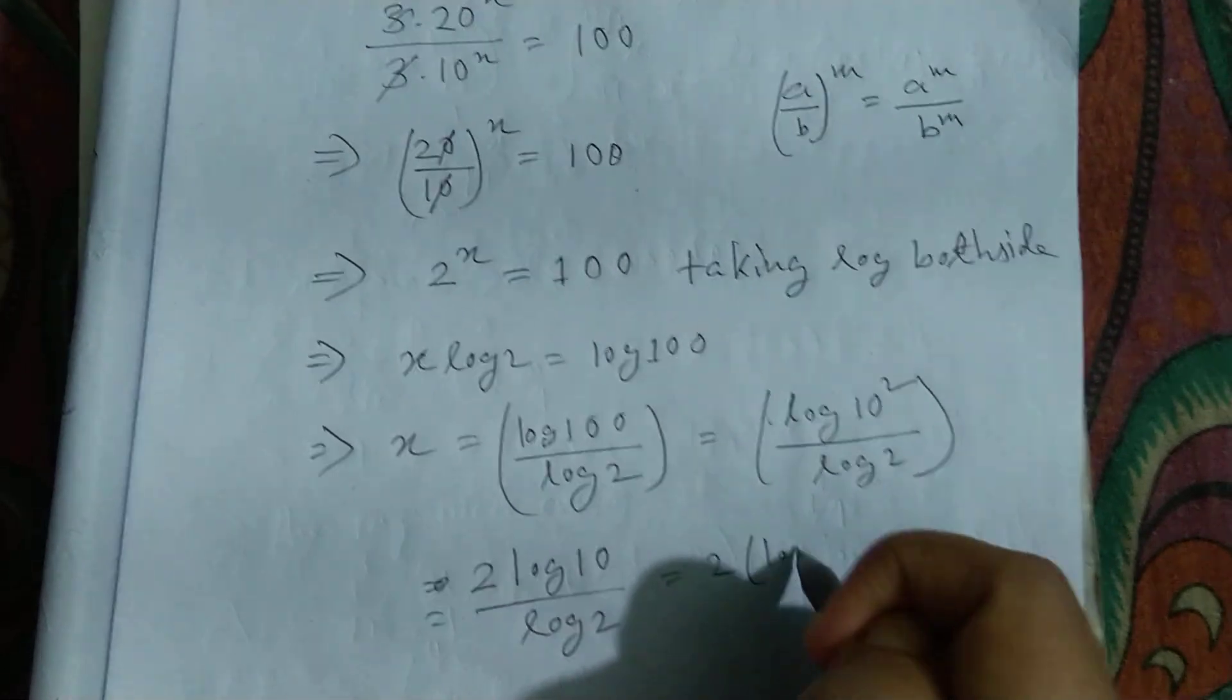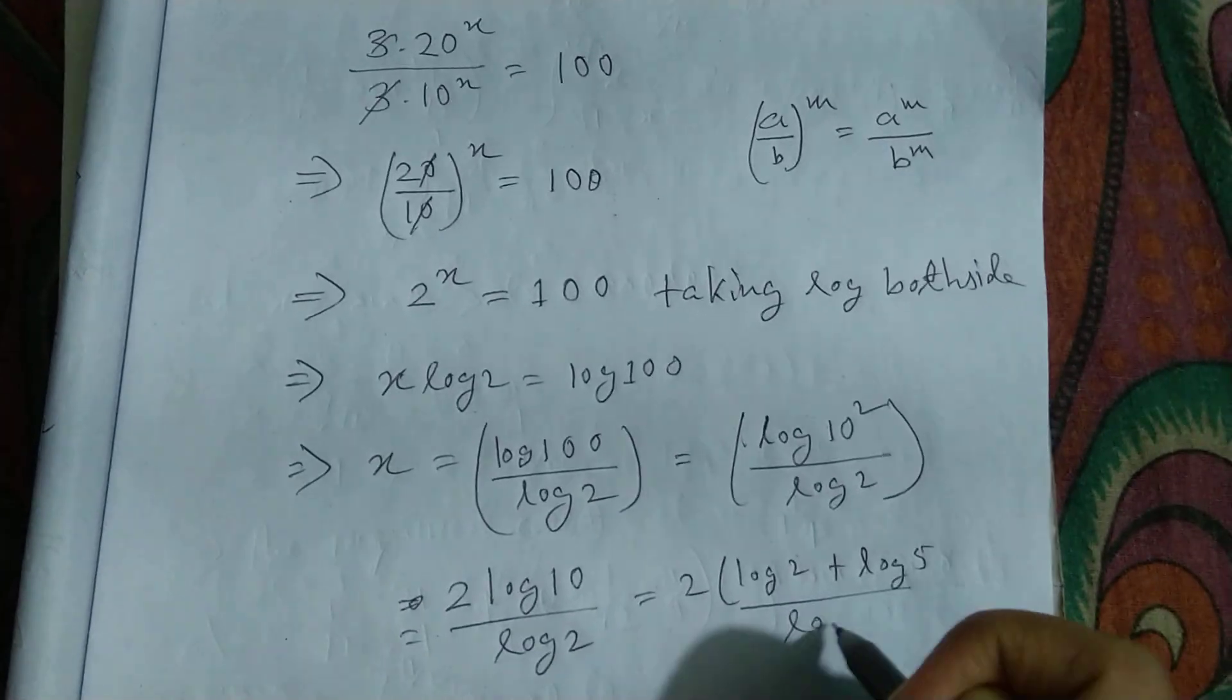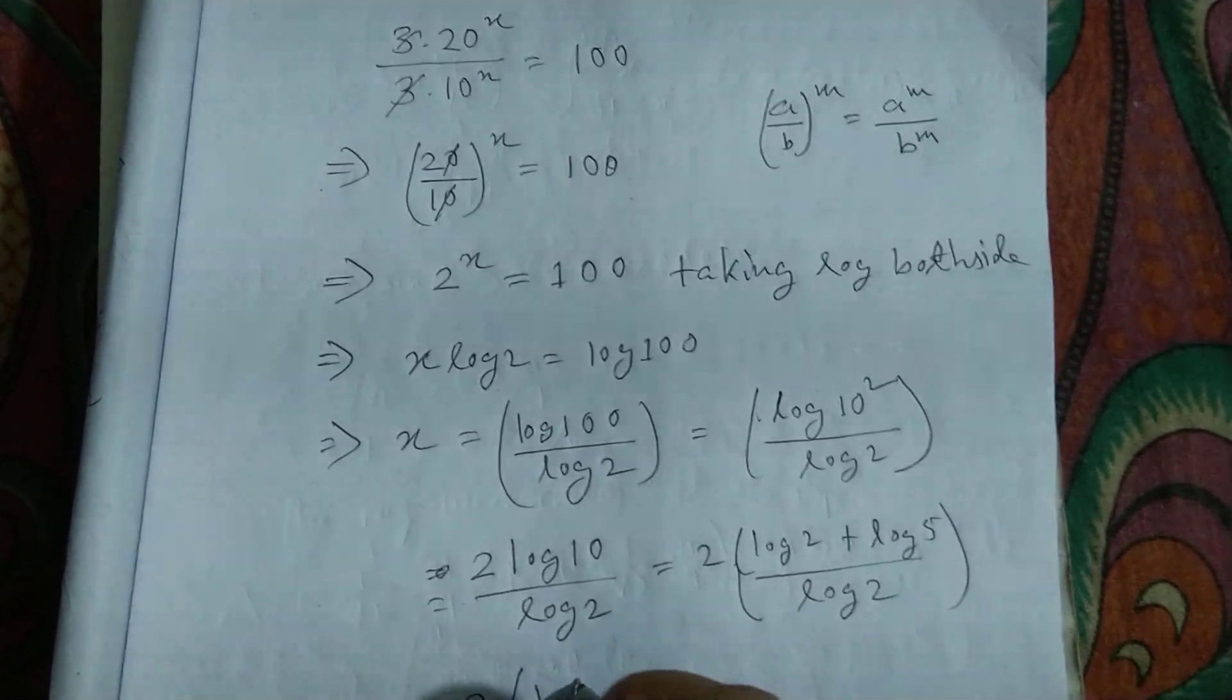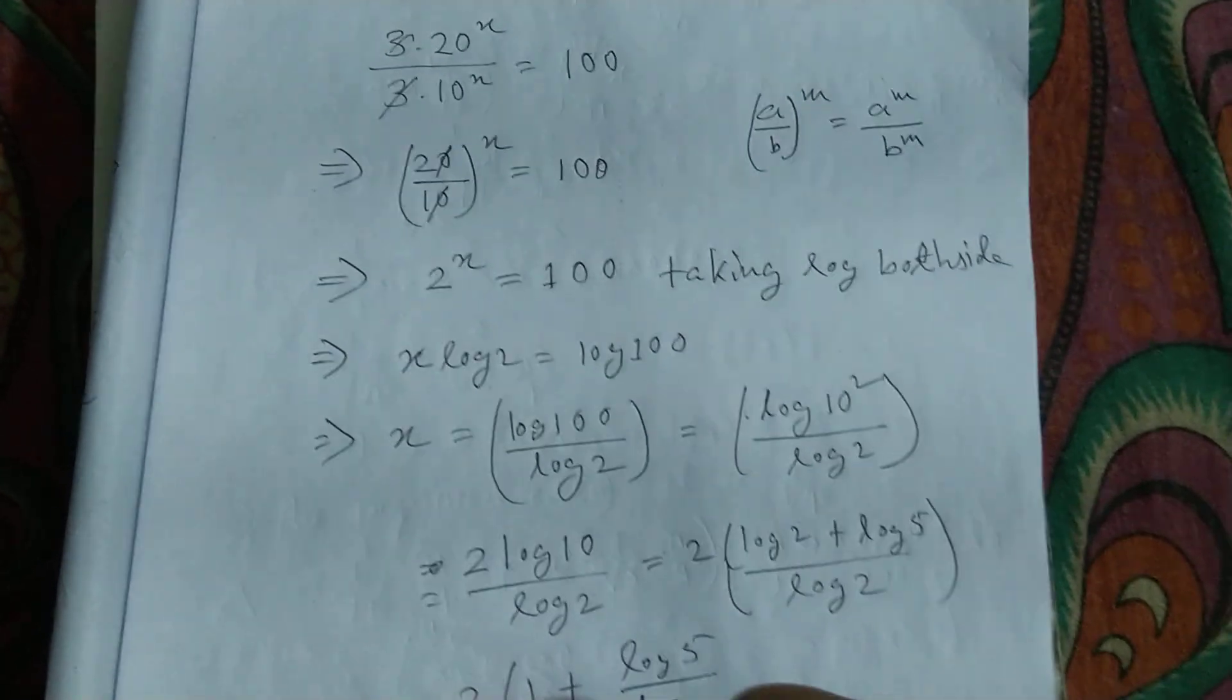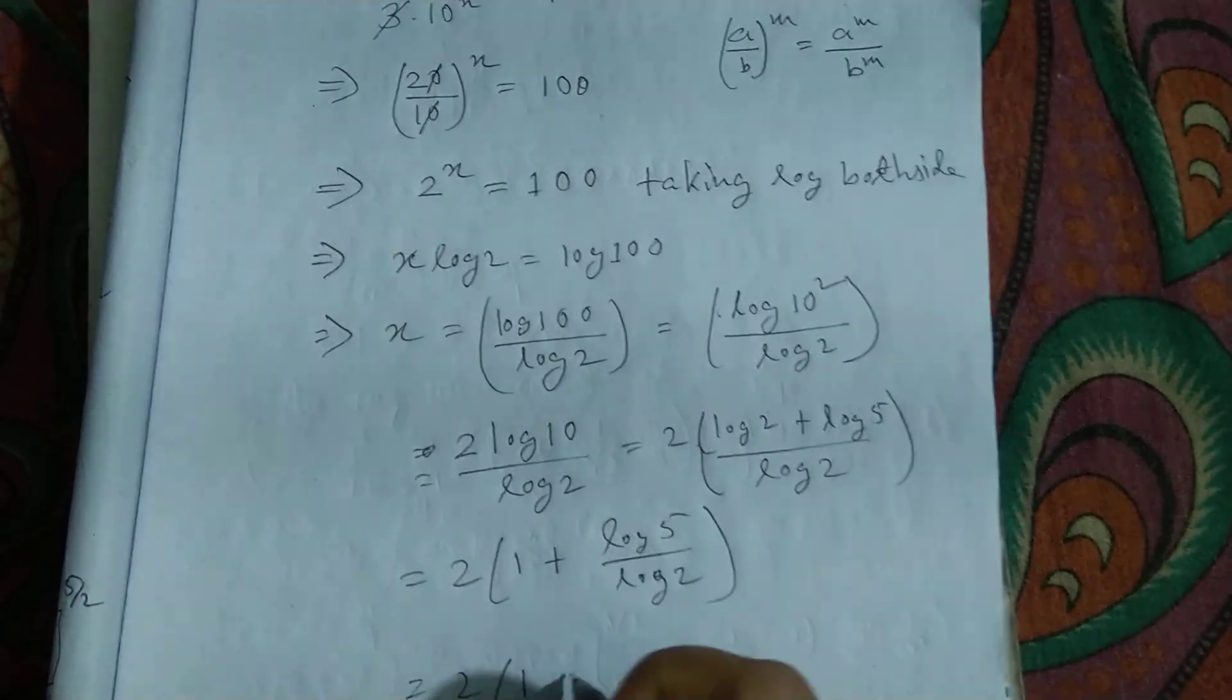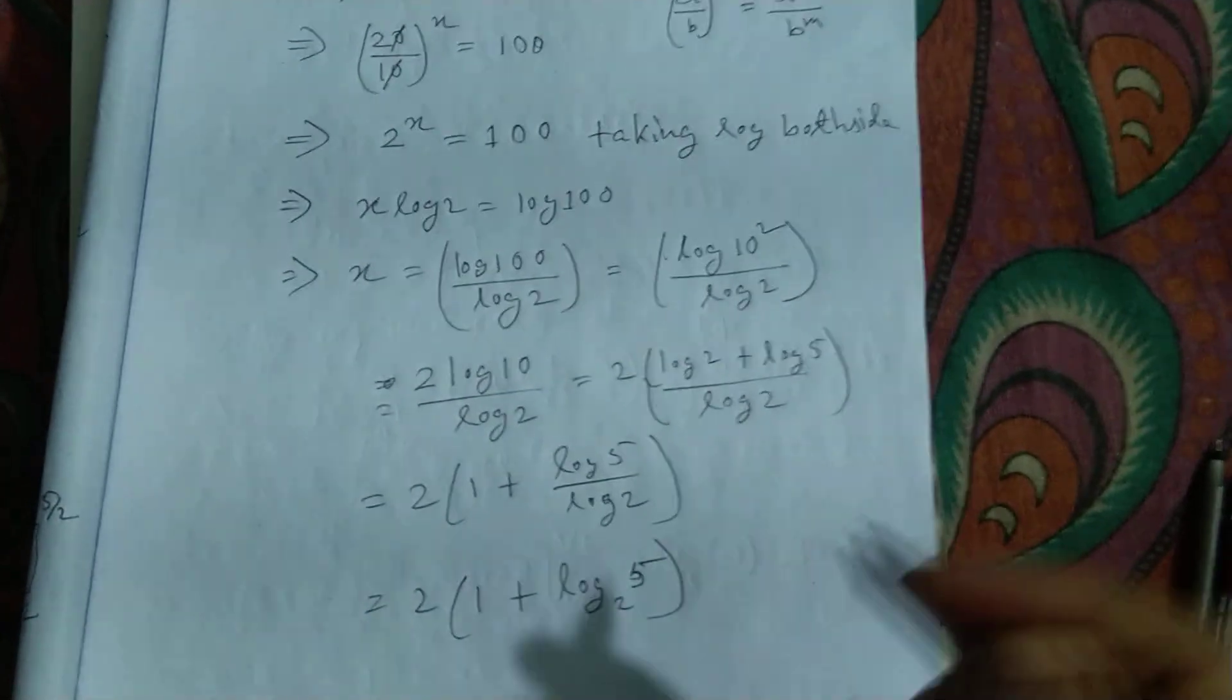This equals 2 times (log 2 + log 5) divided by log 2, which can be written as 2 times (1 + log 5 divided by log 2). This is the total answer.